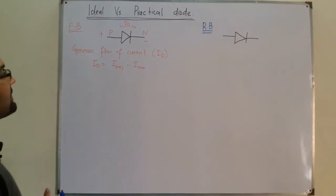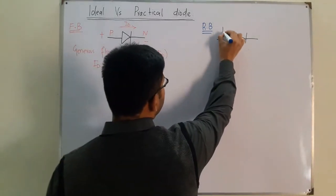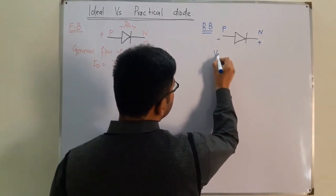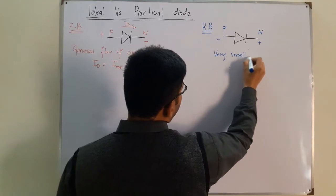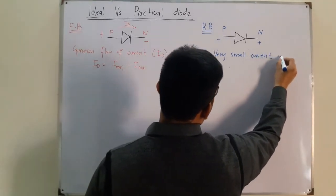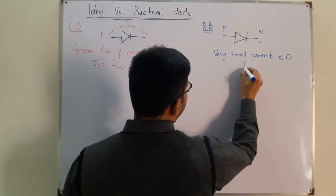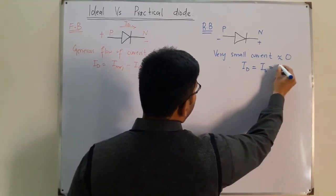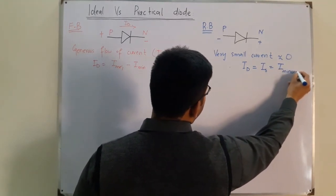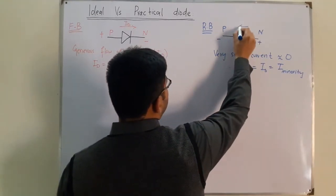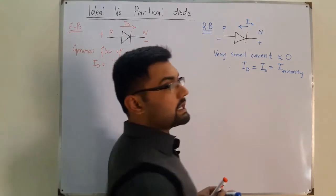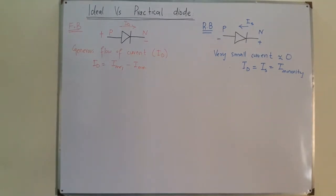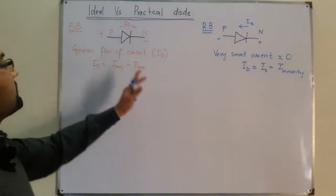In reverse bias, the negative terminal is connected to the P side and the positive terminal is connected to the N side. We have a very small current, which is always approximated to zero. The diode current is only due to the reverse saturation current — the current due to minority charge carriers. This is a very small current, usually in the range of microamperes, but it is always neglected as zero.